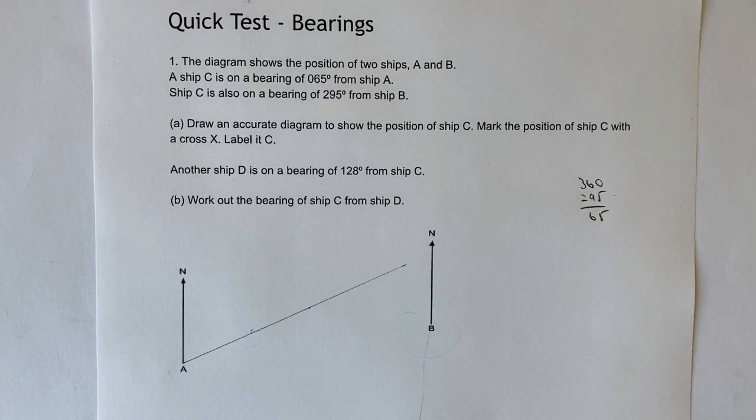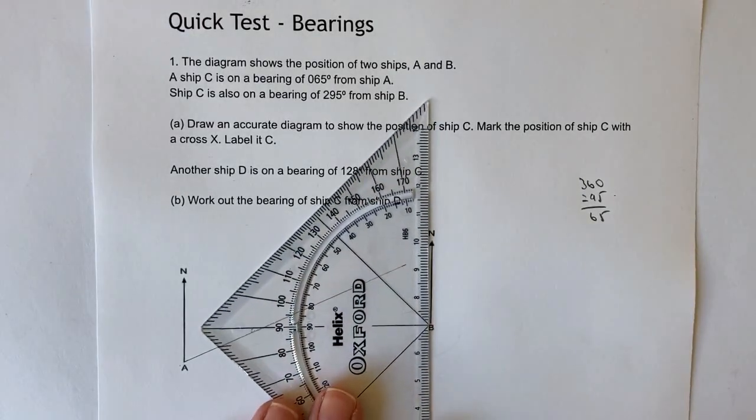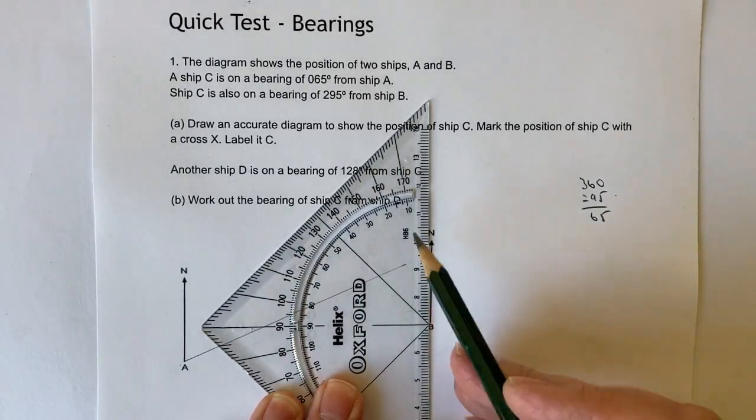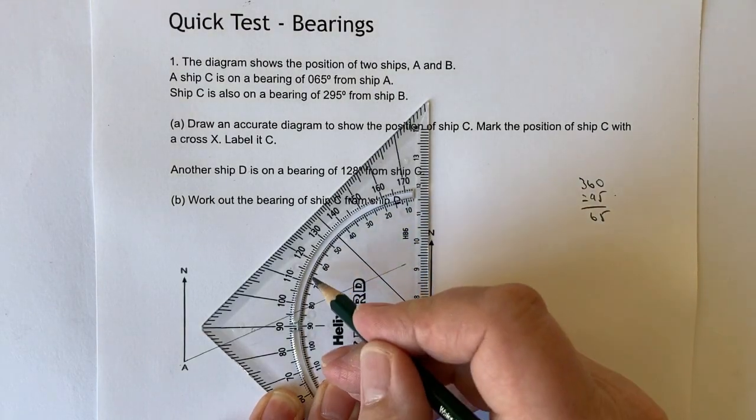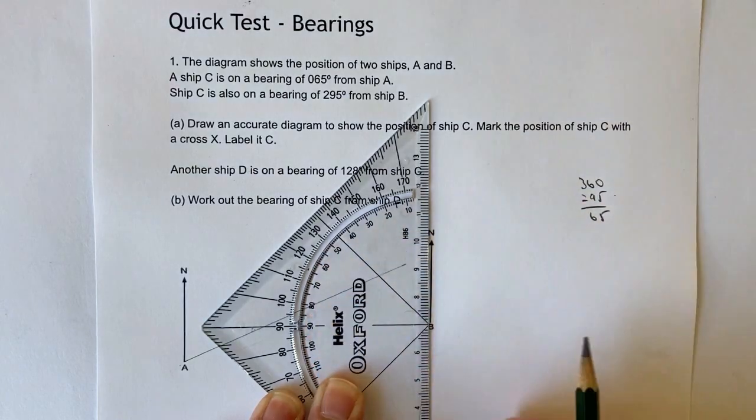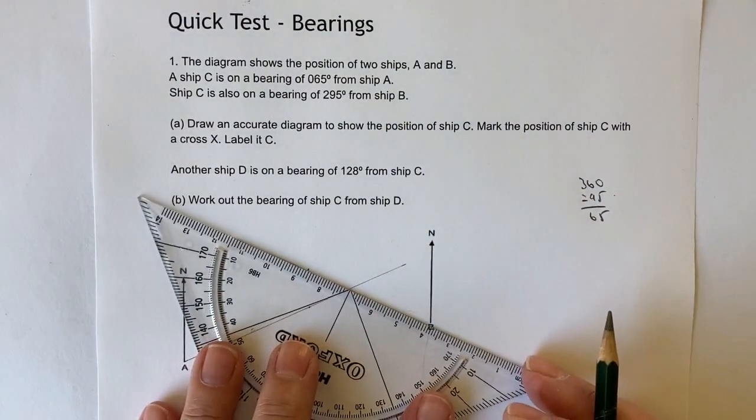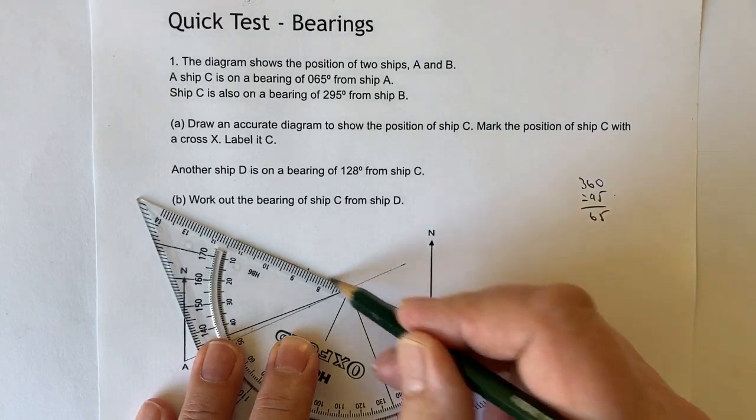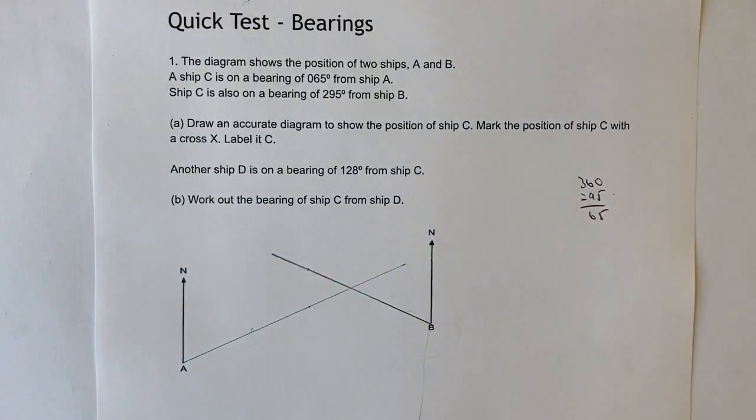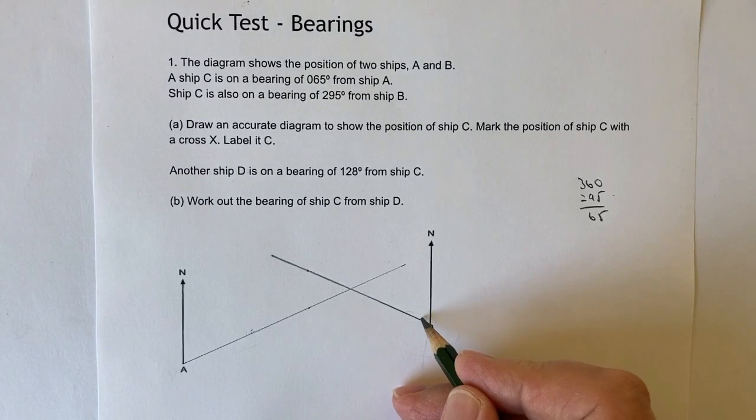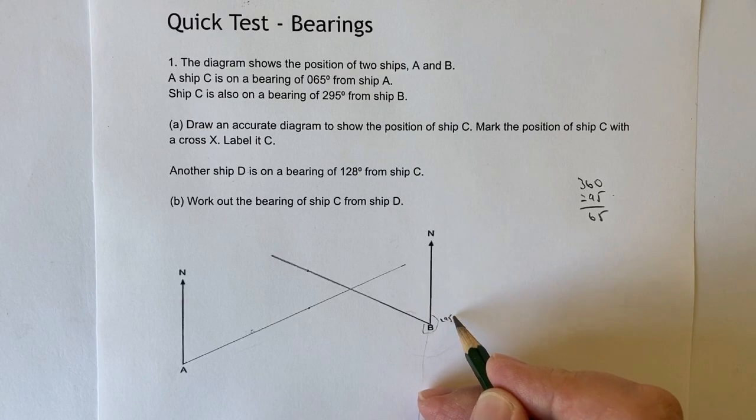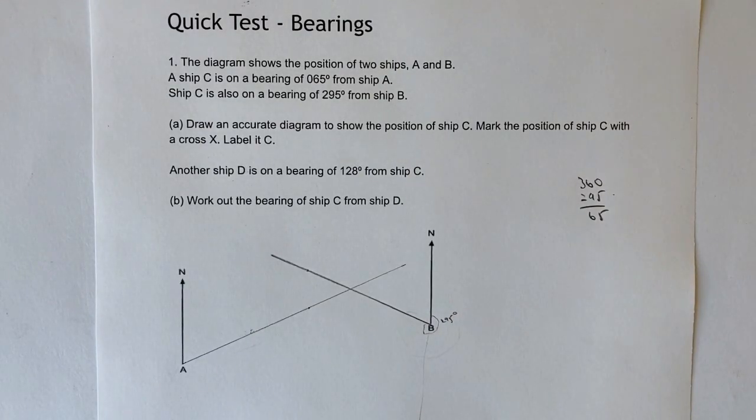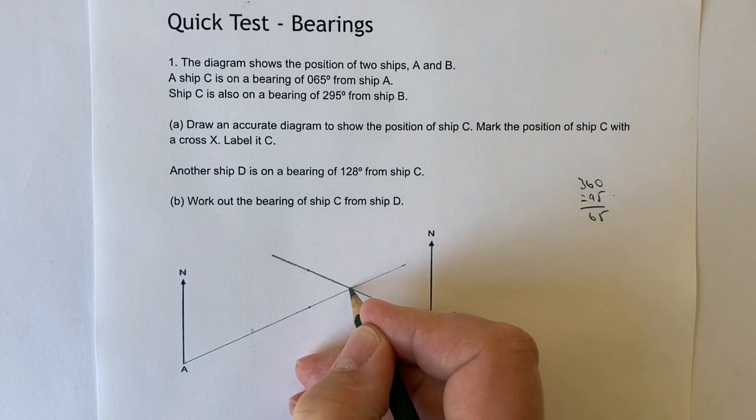So in this particular case then what I'm going to do is I'm going to draw another line at 65 degrees from B and again, hopefully you can see this is 10, 20, 30, 40, 50, 60 and 65. So I'm just going to put a little dot in there and draw this line across. Now what I've then worked out is that this angle is 65 degrees, but actually all the way around here is 295 degrees. Now where those two lines cross is going to be ship C.